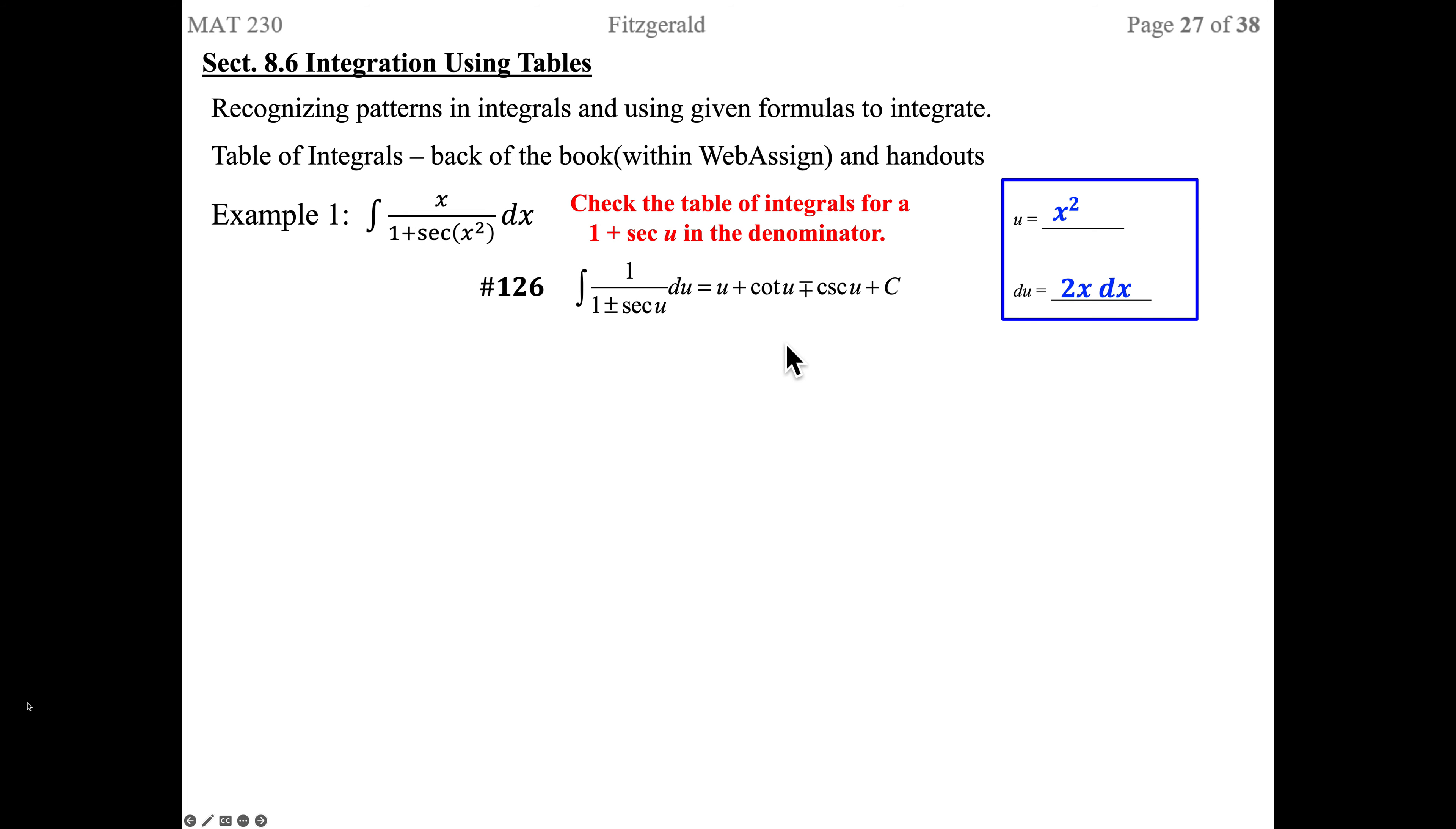So I'll have 1 half, that went with my DU, then 1 over 1 plus secant U. Using this formula with a plus over the negative, we'll have U plus cotangent U minus cosecant U plus C. Then we bring back in the X squared for U, and we have it integrated.